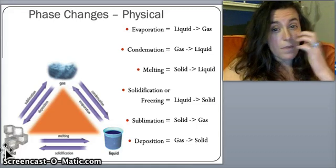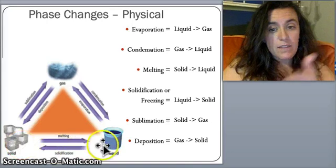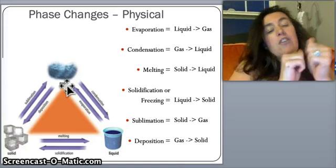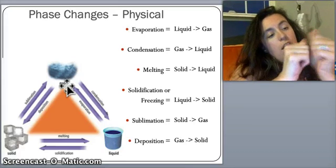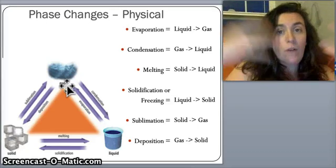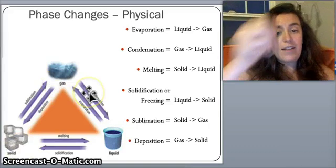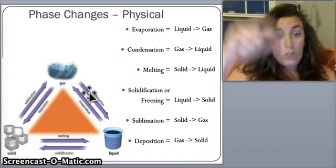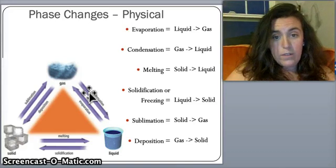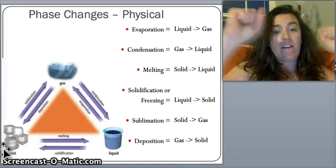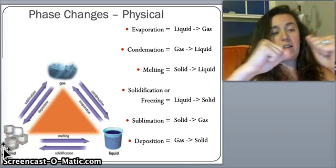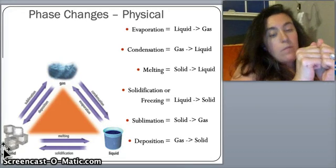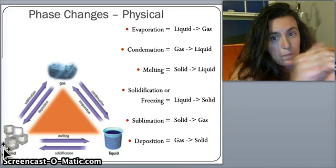As you move from solid to liquid to gas, you're increasing the vibration and movement of those particles because you're adding energy — they're moving faster, spreading further apart. Going the reverse way — gas to liquid to solid — the particles are coming back together, moving slower and slower, getting closer and closer until they're tightly packed in solid form.